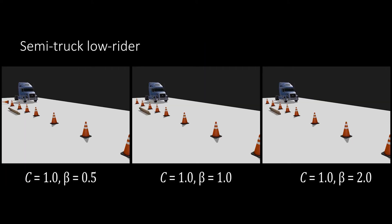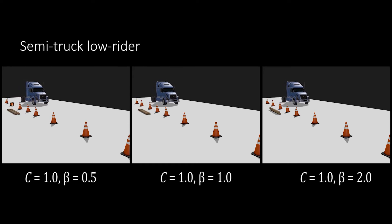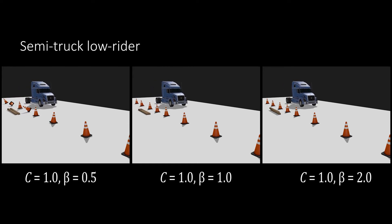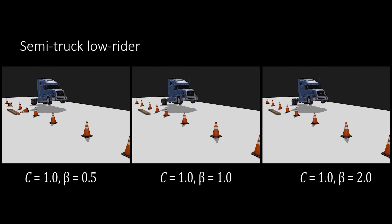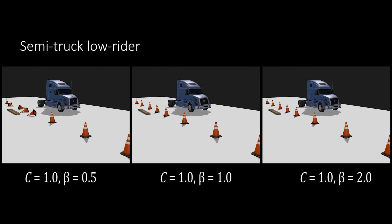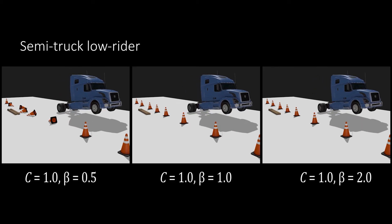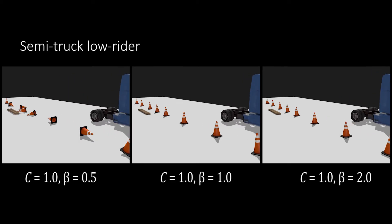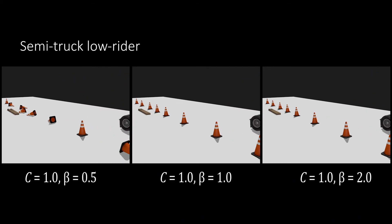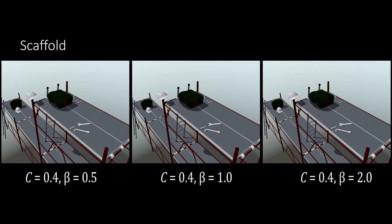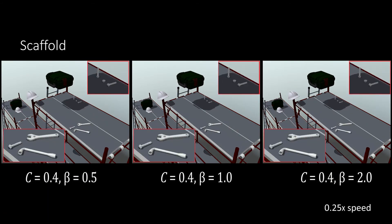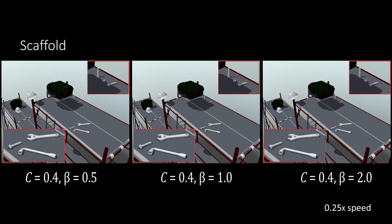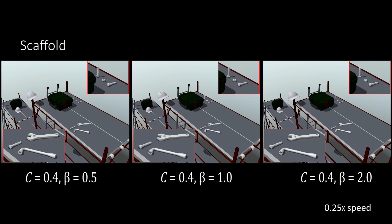Finally, here we see how the distant collision response changes with different settings of our simplified spatial attenuation model parameters. Please see our paper for a discussion of parameter fitting and other details.